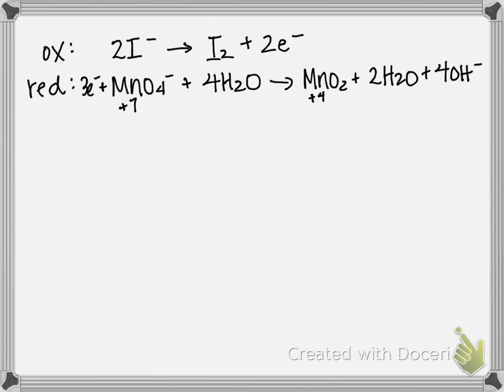So now our next step is to look and see how much of each electrons we have and to balance them with regards to one another. So I have 2 electrons in my oxidation half reaction, 3 electrons in my reduction. Therefore to get equal numbers, that's going to be 6. So I'm going to multiply my first reaction by 3, and my second reaction I'm going to multiply by 2.